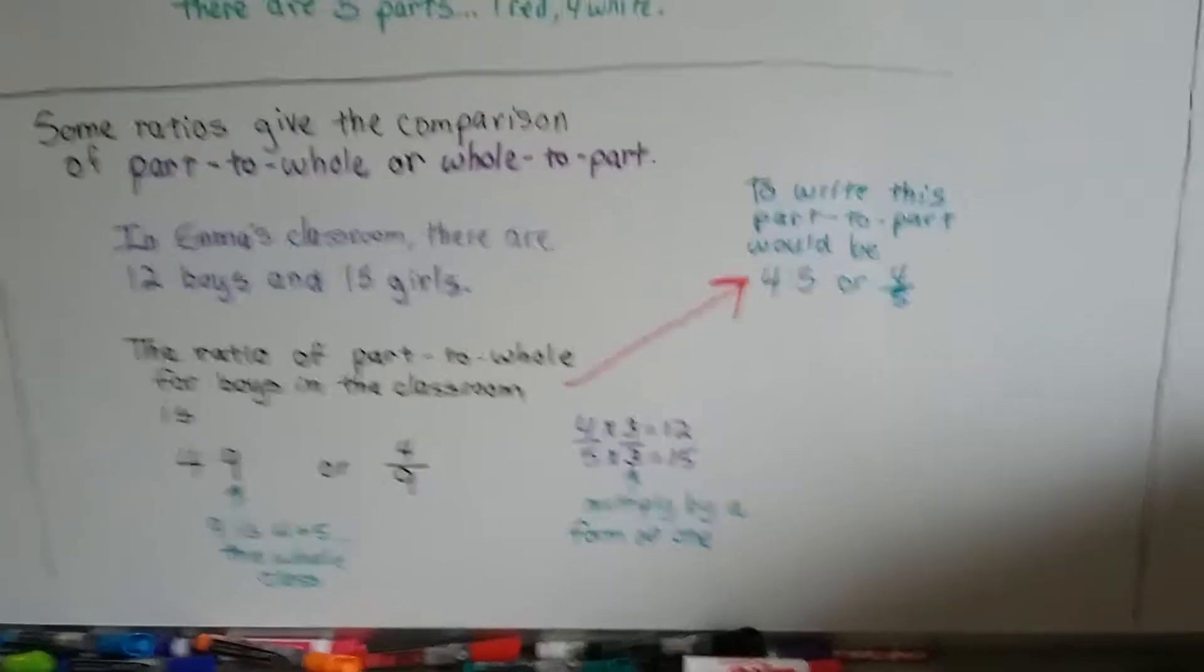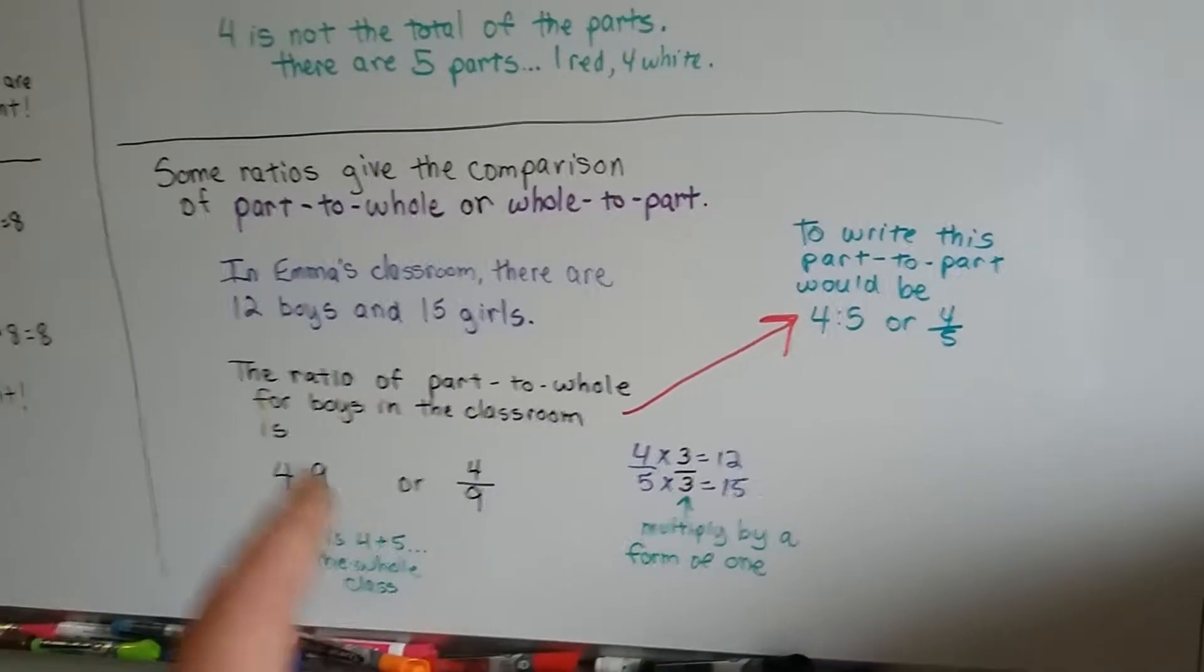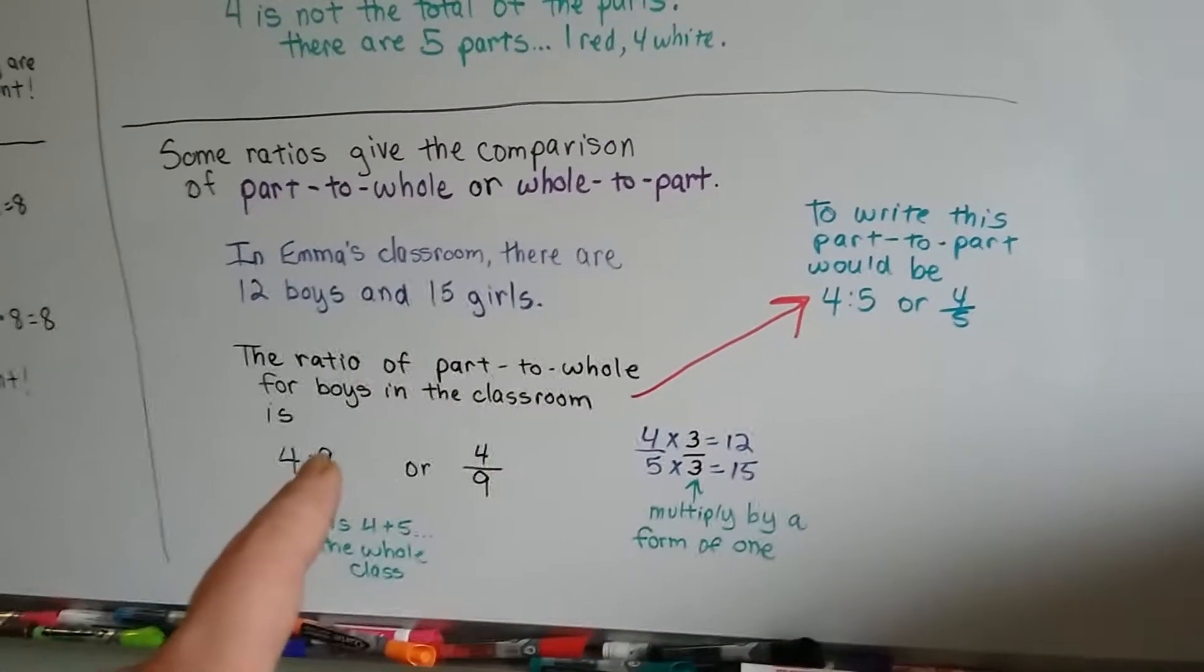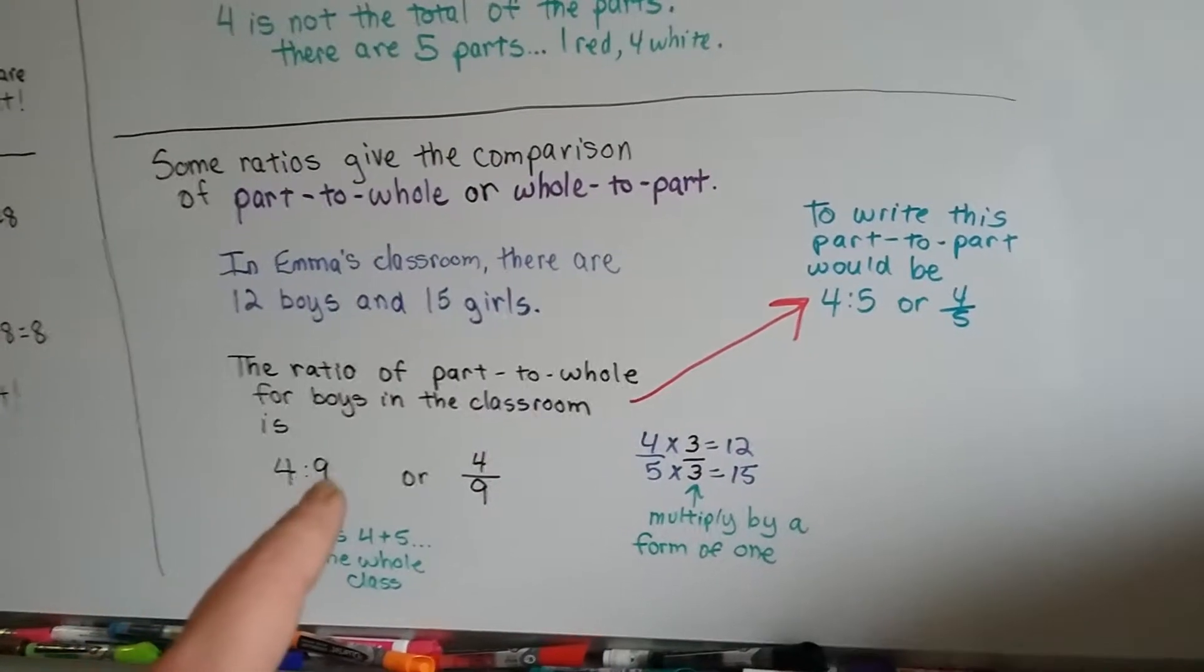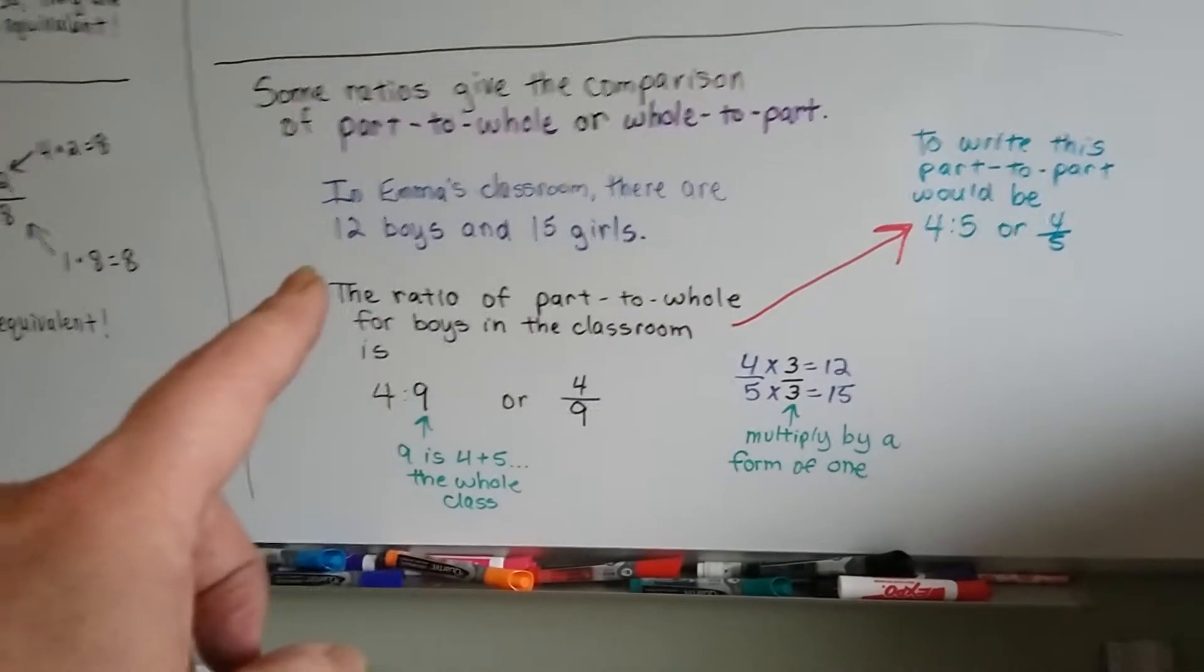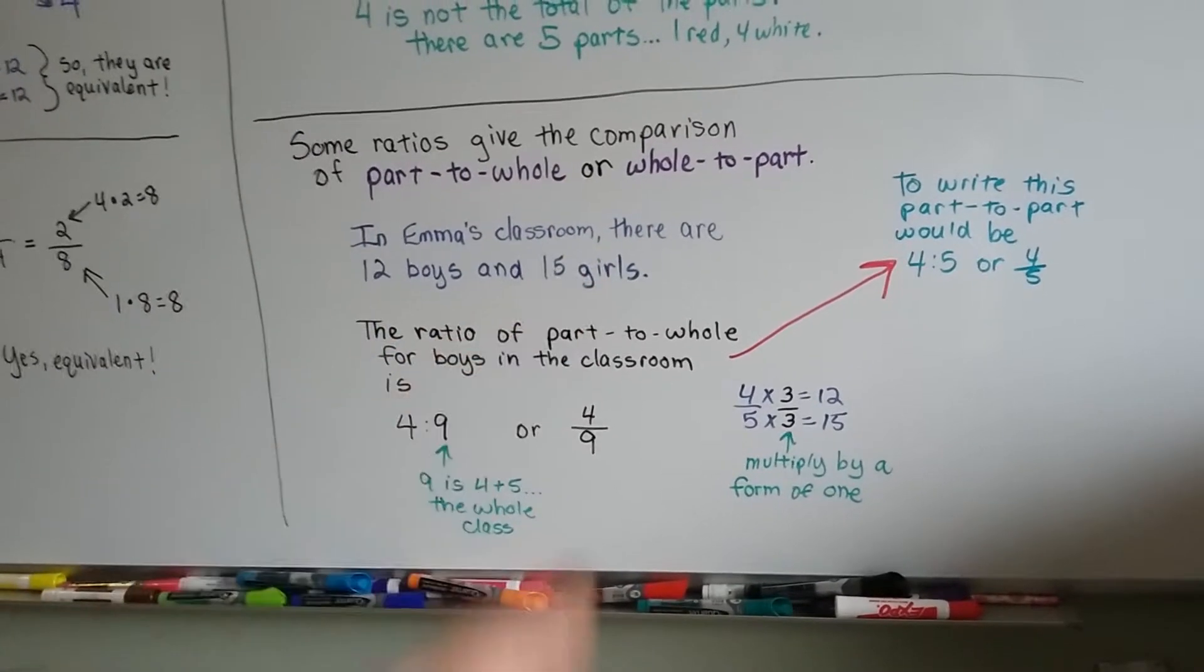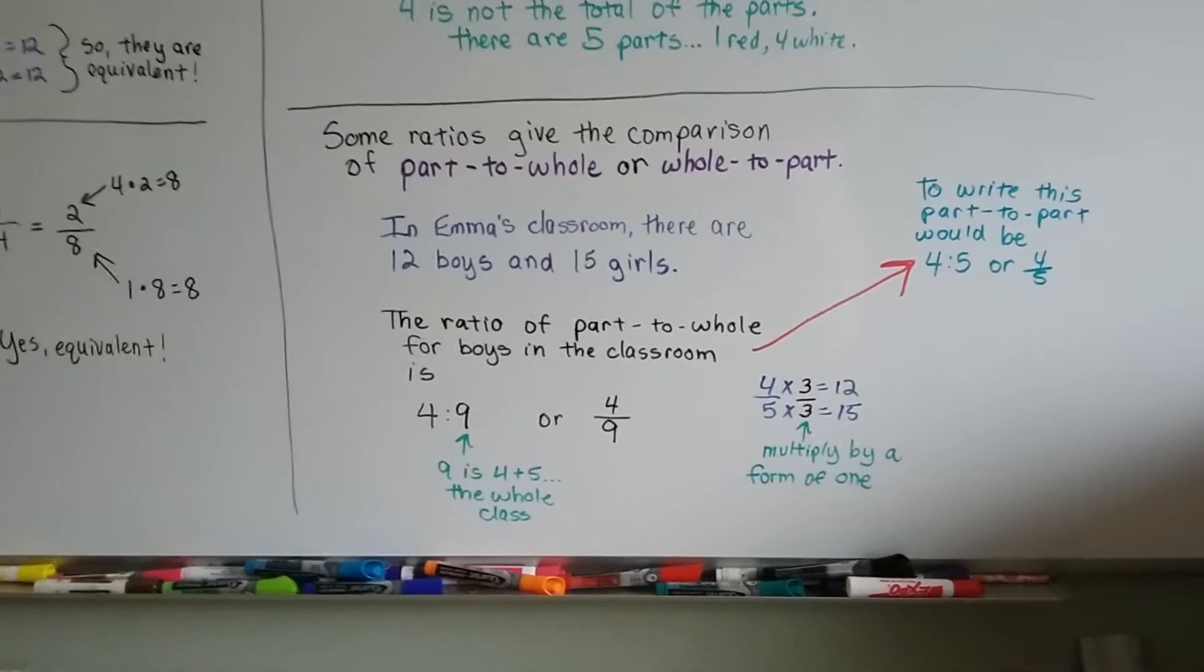If we wrote this as a part-to-part ratio, it would be 4 to 5. But we wrote it as a part-to-whole. And by adding these two numbers together, the 4 and the 5, we got the whole, which was 9. And we compared the ratio of boys to the whole class. We also could have said 12 to 27, because there's 27 if we add these two together. 12 boys to 27 could also have been the ratio, but we want to reduce it and simplify it.